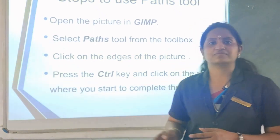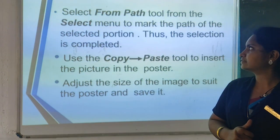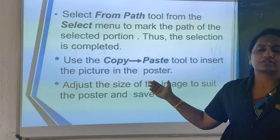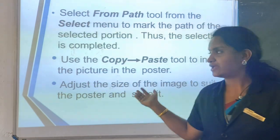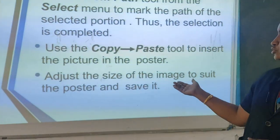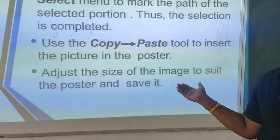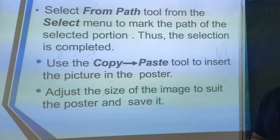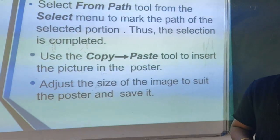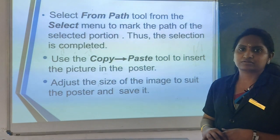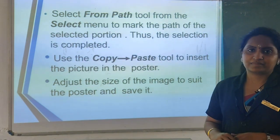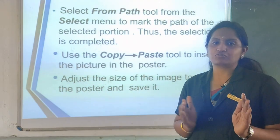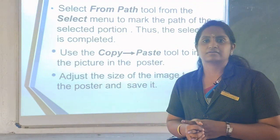After the selection, we are copying the images to canvas. From the path tool, you have marked the portion, then right-click and choose the edit option to get the copy option. Take the picture to a canvas by selecting paste. You can adjust the size of the image on the poster canvas using the scale tool.